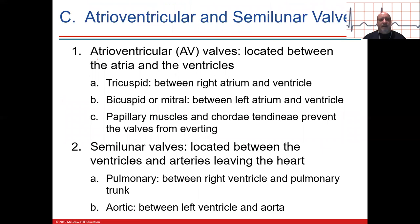The AV valves are located between the atrium and ventricle — tricuspid on the right, bicuspid (also known as mitral) on the left. The structure called chordae tendineae — like heartstrings — attaches to the cusps of the AV valves only, not the semilunar valves. The papillary muscles anchor those chordae tendineae strings to the heart muscle inside the ventricles. The chordae tendineae help the cusps stay closed and in the right position to prevent backflow.